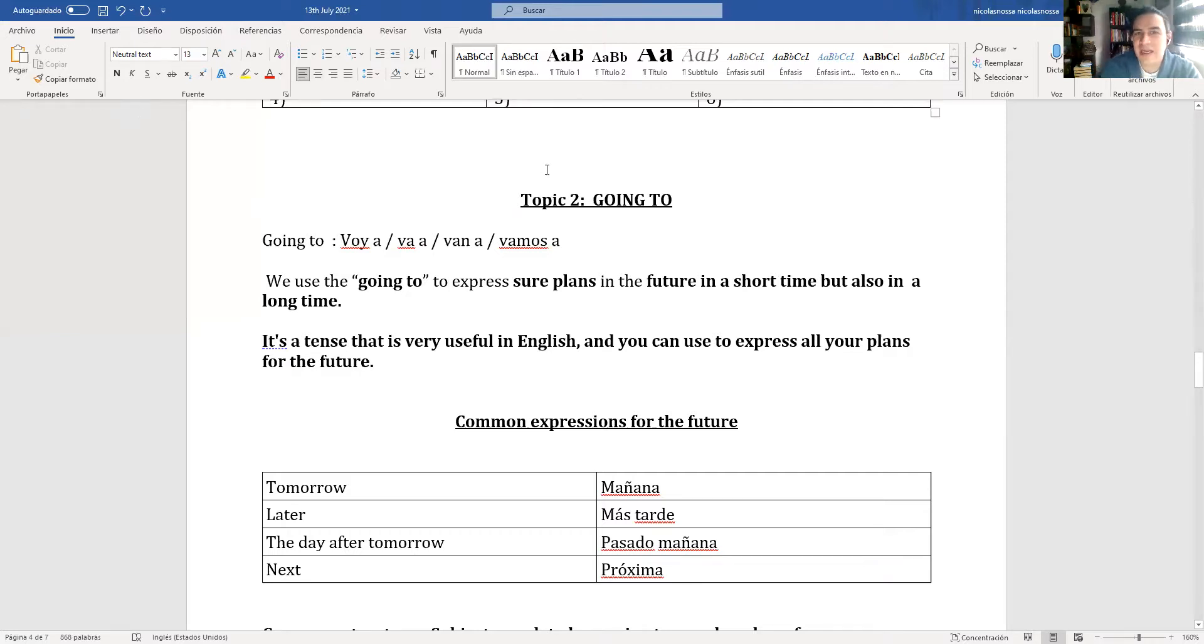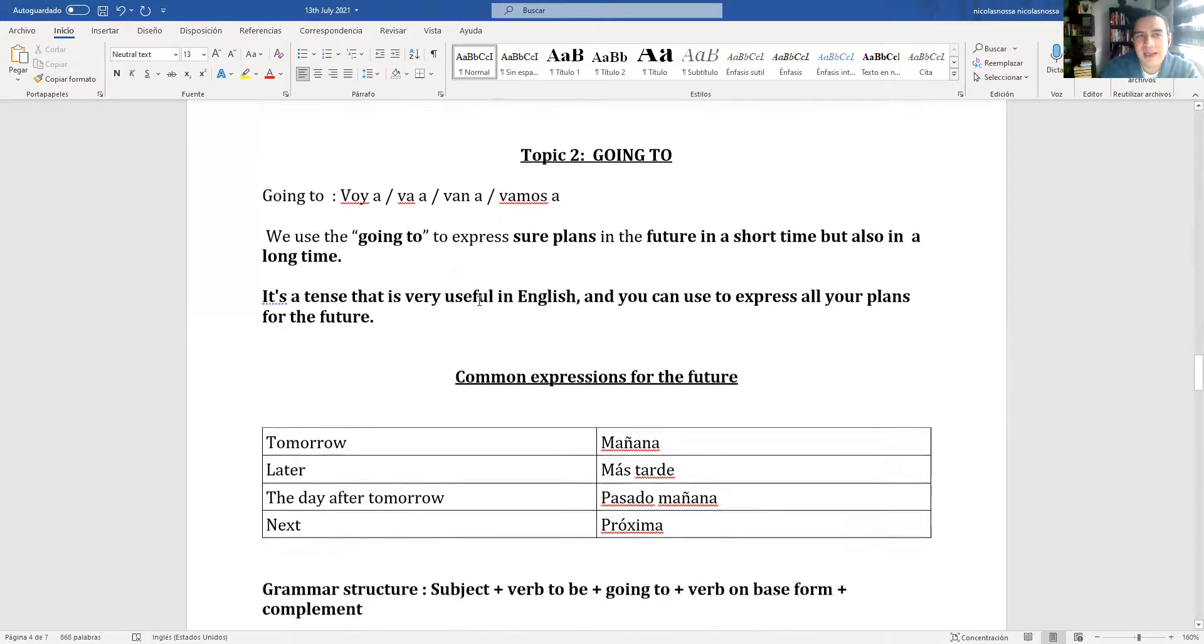Going to, so in Spanish, cuál es su interpretación: voy a, va a, van a, o vamos a. Yo voy a viajar, that would be the going to. Él va a viajar, ellos van a viajar, nosotros vamos a viajar. Listo, ese sería nuestro going to en español.